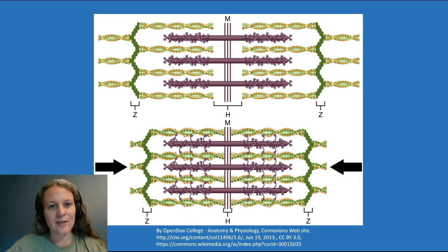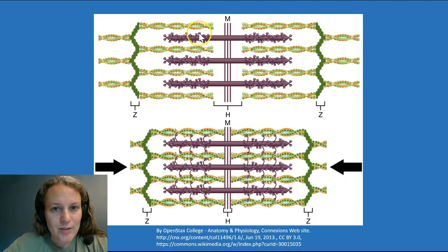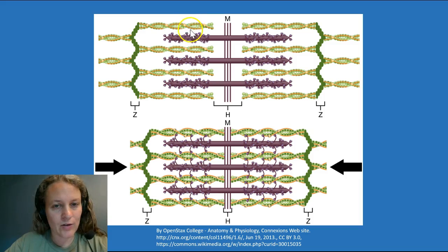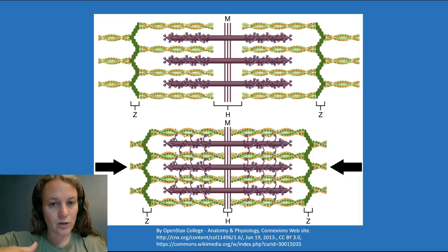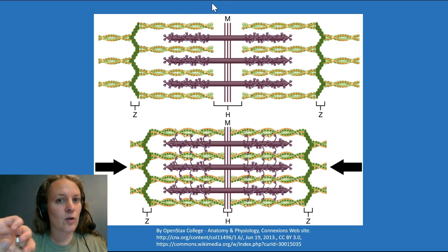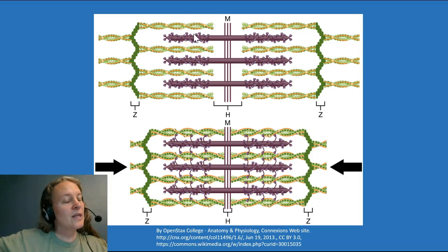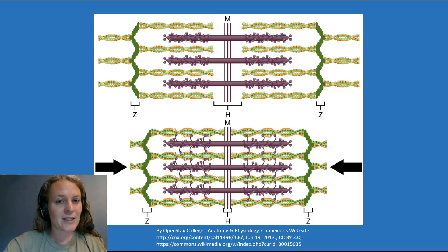Looking at a close-up, the green represents actin and the purple represents myosin. The myosin has little structures called myosin heads that reach out and grab hold of the actin fibers. The reason they don't do this all the time is that the binding sites on the actin are covered up in the resting state — like a trap door that's shut over them. Proteins called tropomyosin and troponin cover the binding sites so the myosin heads can't reach out and grab.